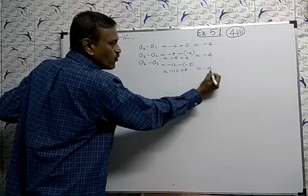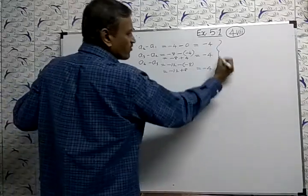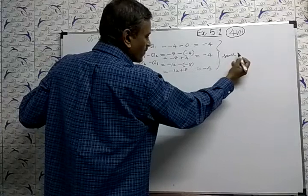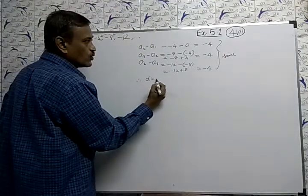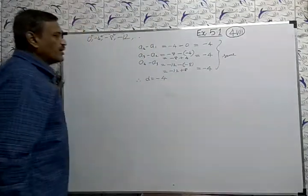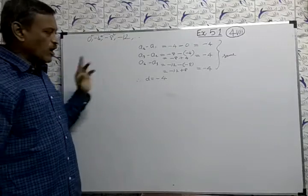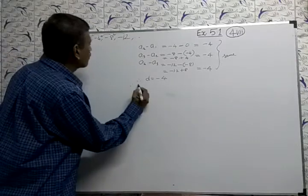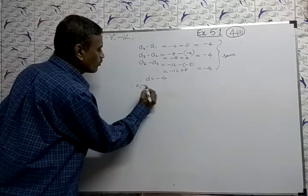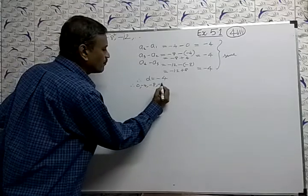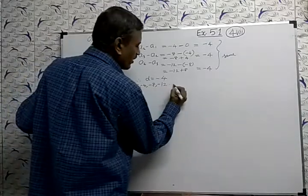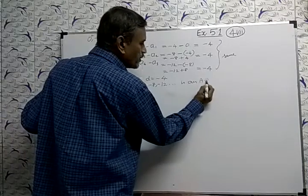All same difference coming. Therefore d equals -4. It is an AP. Common difference, therefore: 0, -4, -8, -12 is an AP.